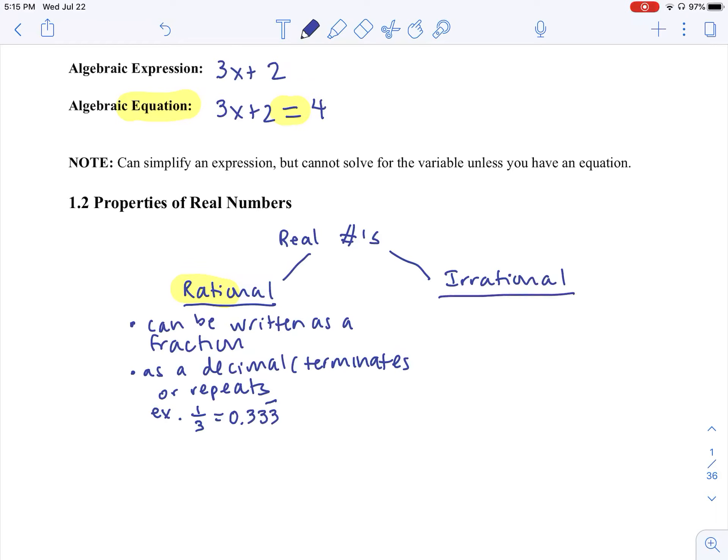If you can't write it as a fraction, we classify it as irrational. So irrational numbers are non-repeating and non-terminating decimals. Can anyone think of anything that is irrational?